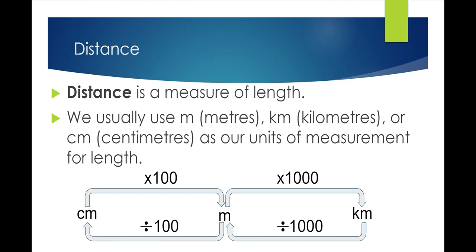Distance is a measure of length. We usually use meters, kilometers, or centimeters as units of measurement. We mostly use meters per second for velocity. For conversions: centimeters to meters, multiply by 100; meters to kilometers, multiply by 1000. Conversely, kilometers to meters, divide by 1000; meters to centimeters, divide by 100.